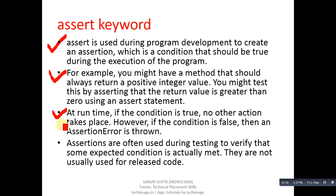At runtime, if the condition is true, no other action takes place. However, if the condition is false, an assertion error is thrown. If the assert condition is true, normal execution of the program takes place. If the assertion condition is false, an assertion error will be thrown. Assertions are often used during testing to verify that some unexpected condition is met. They are not usually used for released code, so assertions are used for testing purposes only.